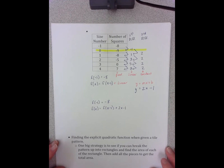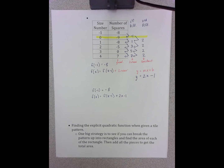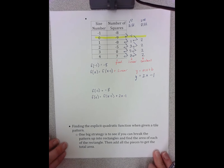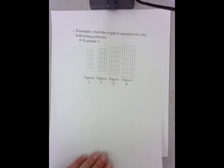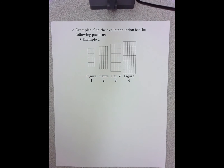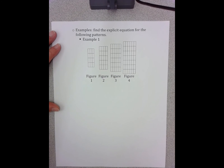The second way we've looked at these equations is to find the explicit. When we've done that, at least in this chapter, we've really only looked at tile patterns — we haven't done the explicit from a table, and that will be covered in a later module. When I'm looking at a tile pattern, one really great strategy is to look at area and look at rectangles. In this first pattern, my shapes are already rectangles, so I have less work to do.